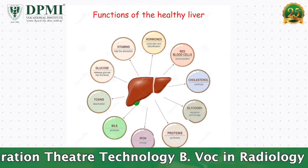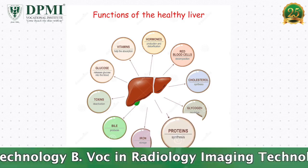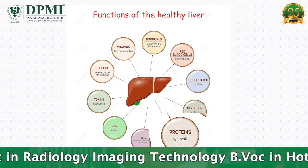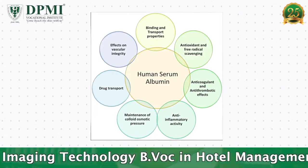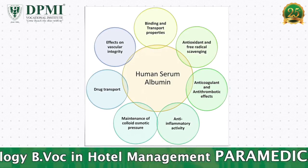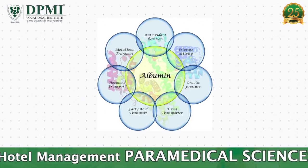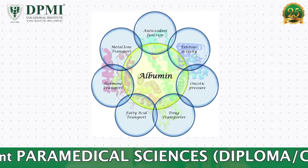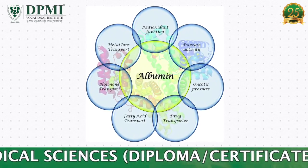Albumin is synthesized in the liver and the rate of synthesis is dependent on protein intake but is regulated by the plasma Albumin level. The important functions of Albumin are to maintain oncotic pressure, serve as a source of endogenous amino acids, act as a buffer, and to transport various substances such as lipids, fat-soluble vitamins, steroids, hormones, antibodies and various carbohydrates.